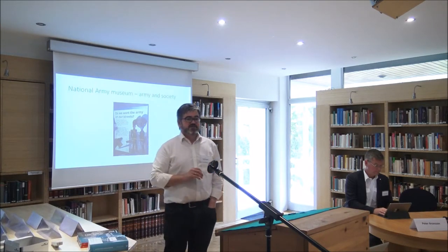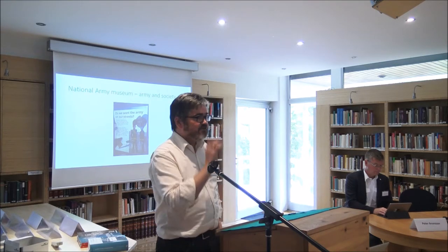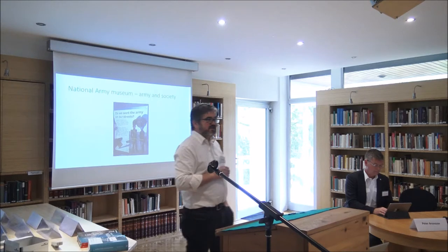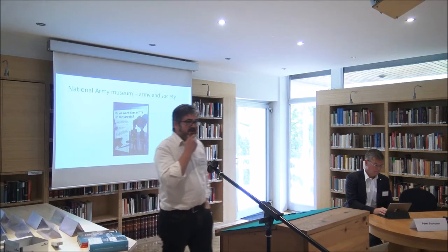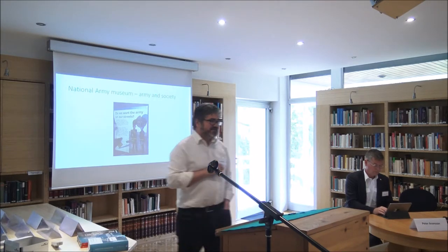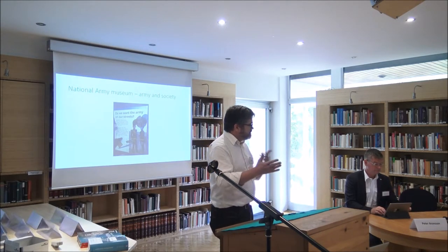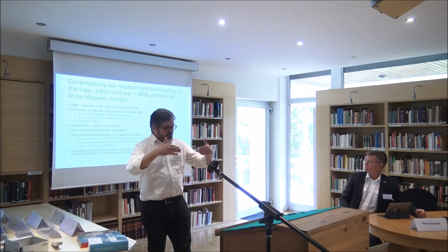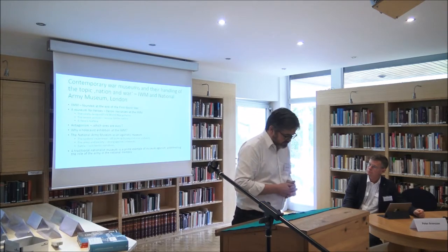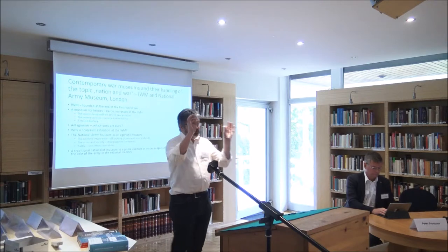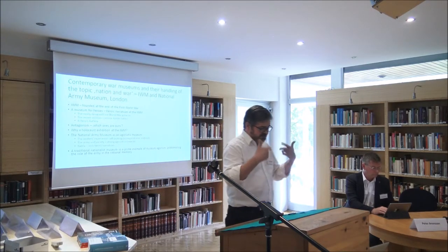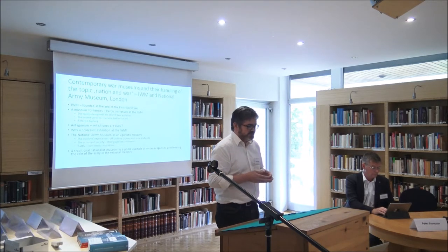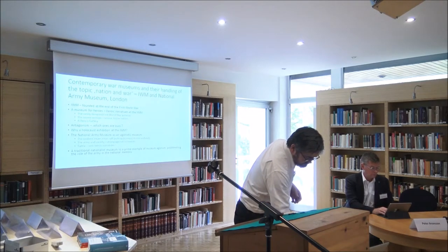The exhibition also has parts on Army and Society and on battle. The Army and Society section contains strong agonistic elements — for example, it asks 'Do we want the Army on our streets?' which is a historic question for Britain, given occasions when deployment of troops in public spaces has been discussed, most prominently in relation to the conflict in Northern Ireland and, more recently, terrorist attacks. So there is a strong agonistic part here. Overall, we have a very traditionalist, even nationalist museum in the Imperial War Museum, and the National Army Museum as the prime example of a museum that problematizes the role of the Army in society and British history.